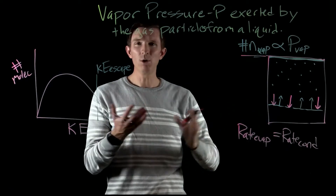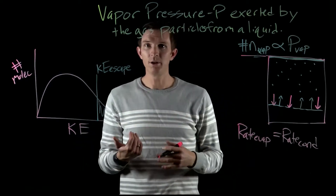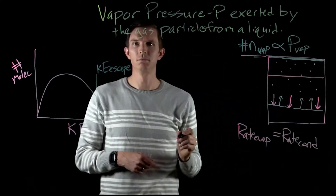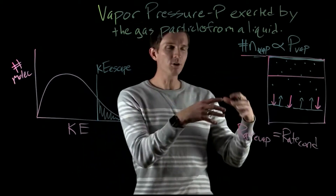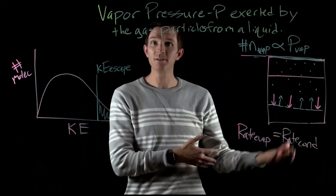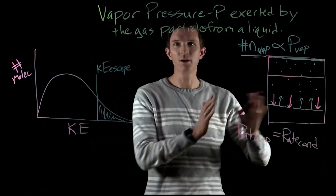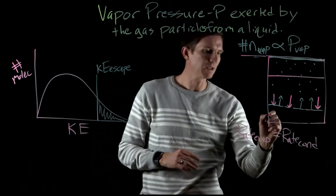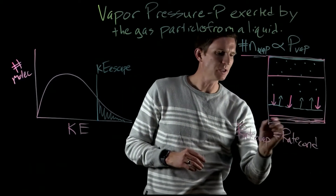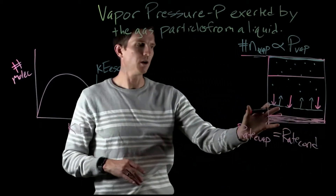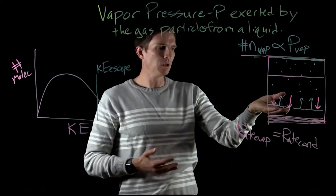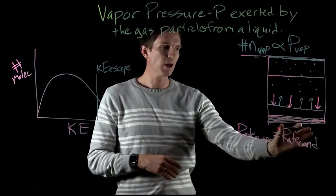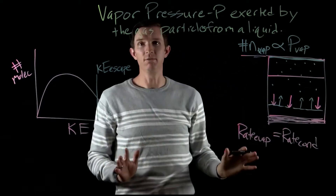Now let's look at what variables affect vapor pressure and what don't. If we cut the volume in half, the force exerted per unit area would be the same, so changing volume does not affect vapor pressure — whether you have a huge volume or a small one. Similarly, if we have less liquid, we still have the same interface between the liquid and the gas, and we're going to have the same constant vapor pressure.